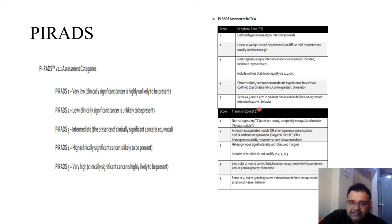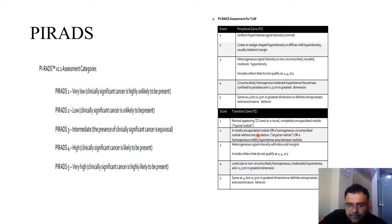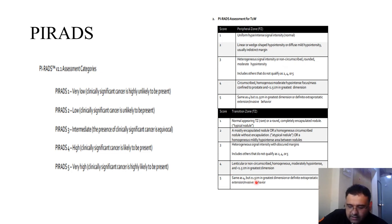For the transitional zone on T2 imaging: a normal-appearing nodule scores 1. A mostly encapsulated nodule with hypointense signal scores 2. Heterogeneous signal with obscured margins scores 3. A lenticular-shaped lesion with greatest dimension less than 1.5 cm scores 4. If the lesion dimension exceeds 1.5 cm, a score of 5 is assigned.